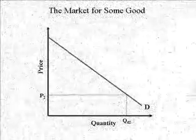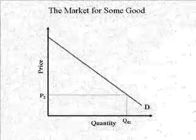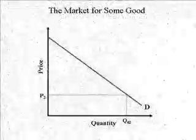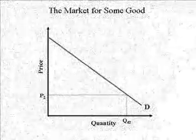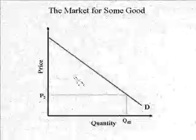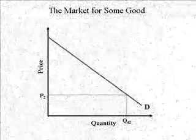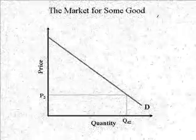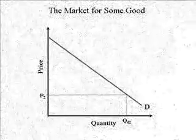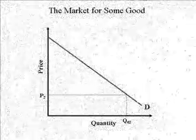The law of demand is a very simple idea. At higher prices, the quantity of a good demanded by consumers is less than at lower prices. At lower prices, the quantity demanded is greater than at higher prices. It is called the law of demand because so much empirical evidence has been found to support the hypothesis that economists just accepted it as axiomatic.